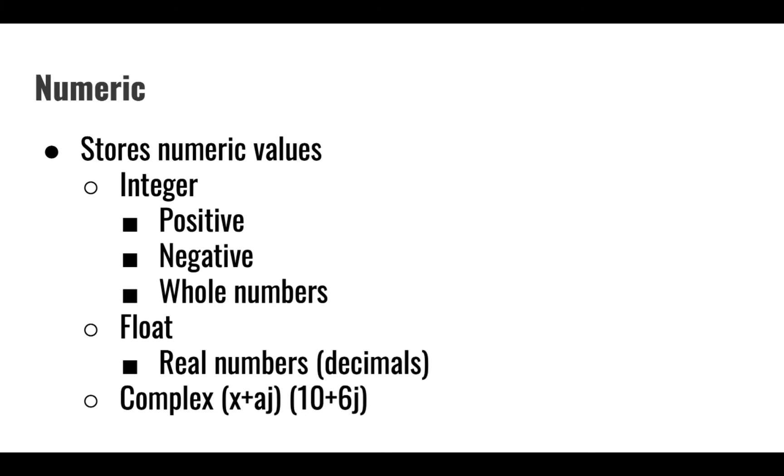Numeric data type stores numeric values. This numeric data type is categorized in three different forms: integer, float, and complex. Integer can be positive, negative, or whole number. Float are the real numbers where decimals are present. Complex is in the form of x plus aj, where we can provide x and a as values inside it.